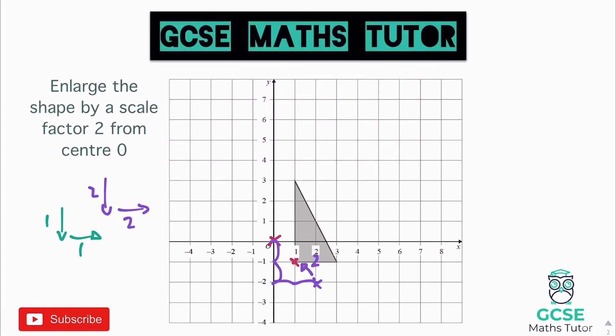Currently the triangle's base is two across, which doubled is four across — one, two, three, four. The triangle is four high, so doubled that's eight high — one, two, three, four, five, six, seven, eight. Double-check that's actually eight up — yes, that's fine. Connect it all together — it does overlap but that's not a problem. There we go, that triangle enlarged by scale factor two from the center.